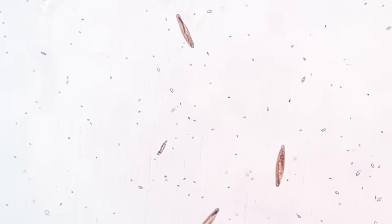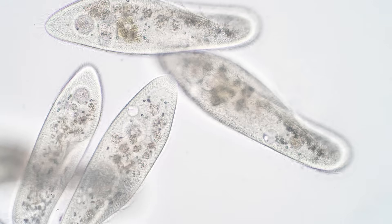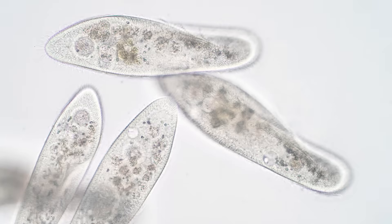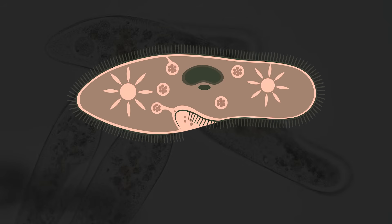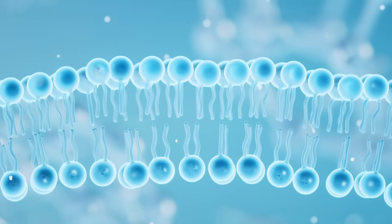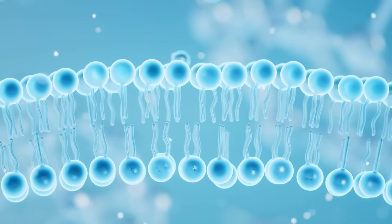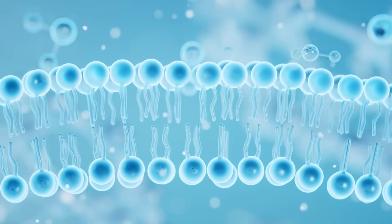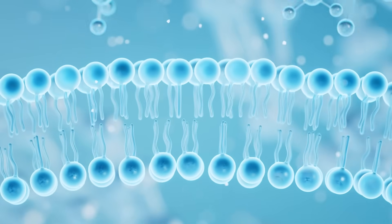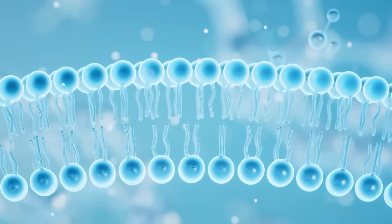Like amoebas, paramecia are predatory protists, and actually have surprisingly complex internal structures. They can take in food, expel waste, and even control the amount of water in their bodies to manage osmosis. Pretty amazing, right?